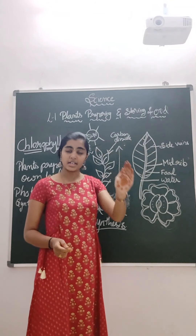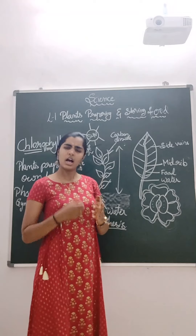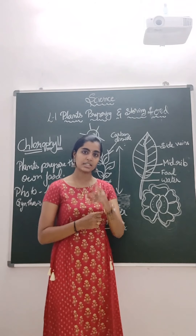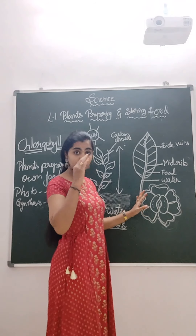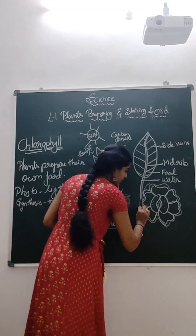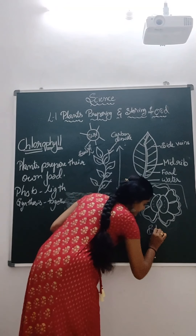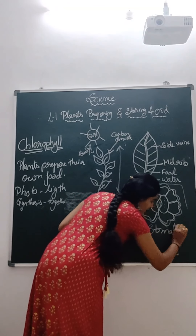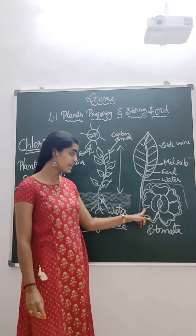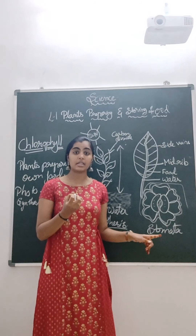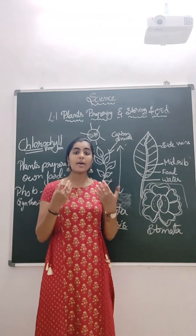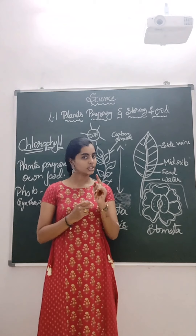How do plants breathe? We have lungs to breathe. Then how do plants breathe? Every plant — at the bottom of the leaf — has a structure called stomata. With the help of the stomata, during photosynthesis, it absorbs carbon dioxide from the air and releases oxygen. It also helps in evaporation of water.